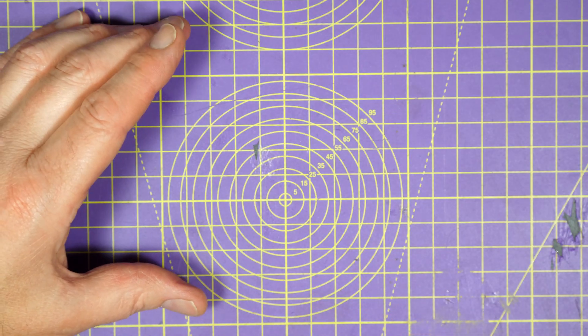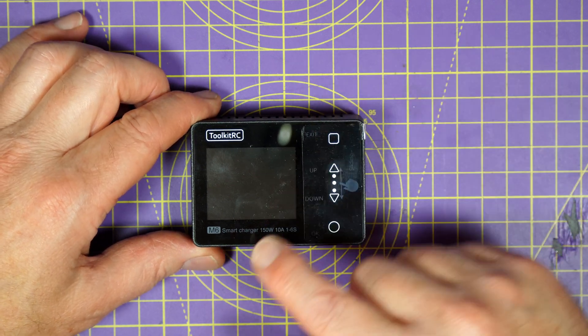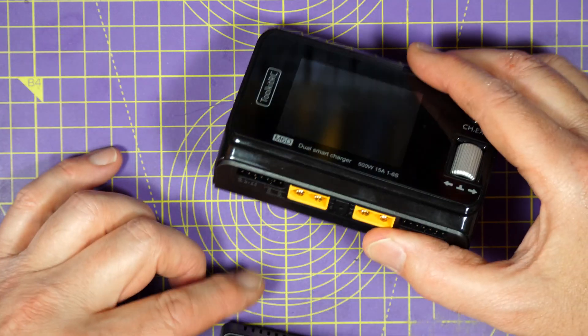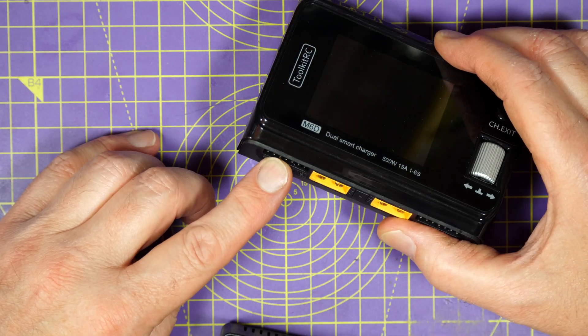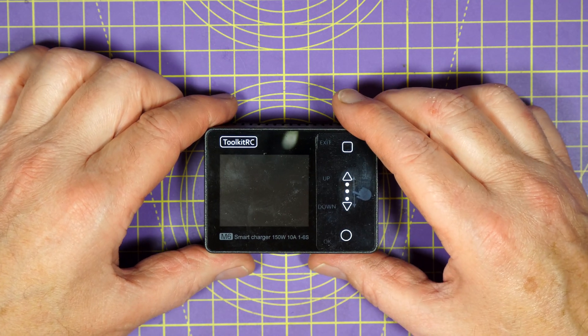But now, Toolkit RC have released an upgraded V2 version of the previous M6 that uses the same balance port electronics as the M6D. Hello, and welcome to the Welly Bloke Channel.